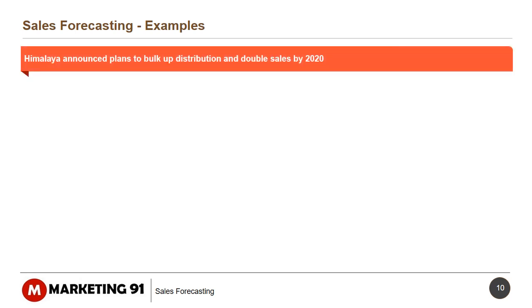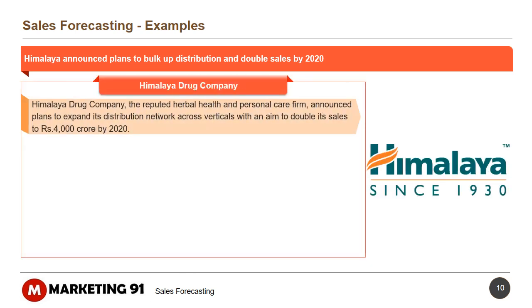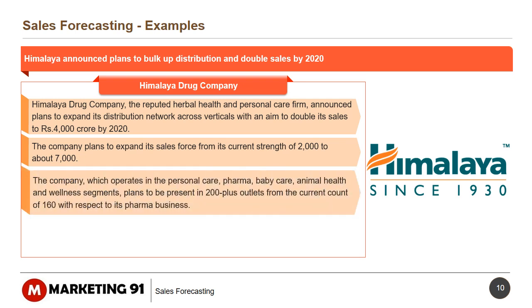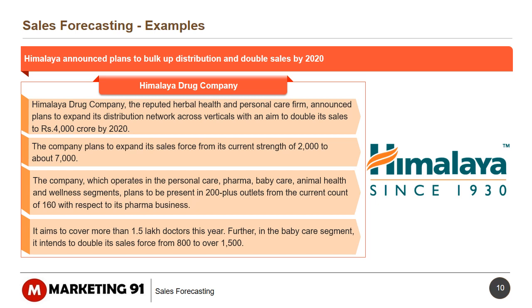Looking at some examples of sales forecasting: Himalaya announced plans to bulk up distribution and double sales by 2020. Himalaya Drug Company, the reputed herbal health and personal care firm, announced plans to expand its distribution network across verticals with an aim to double its sales to rupees 4000 crore by 2020. The company plans to expand its sales force from 2000 to about 7000, and aims to be present in 200-plus outlets from the current 160 in its pharma business, covering more than 1.5 lakh doctors.